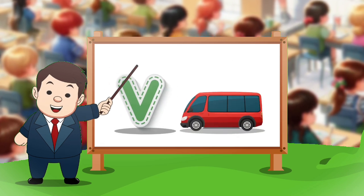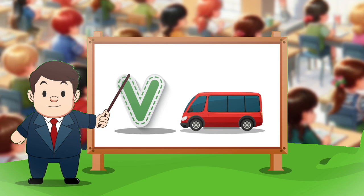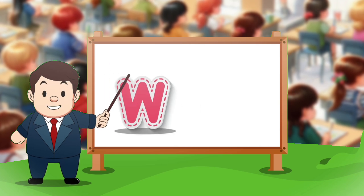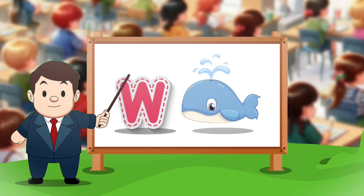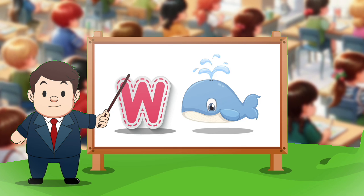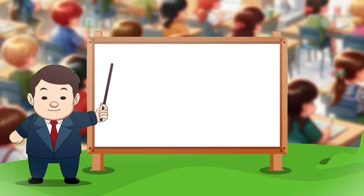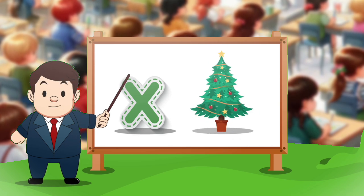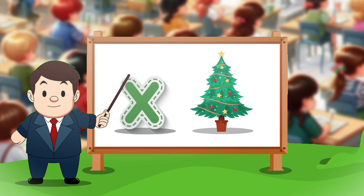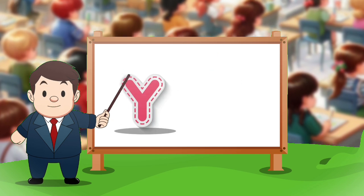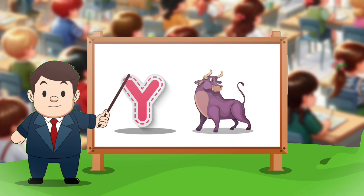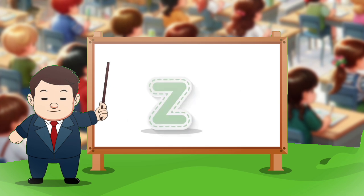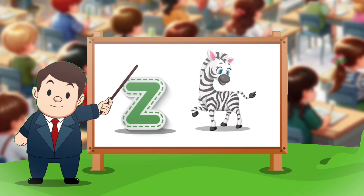V. V for penguin. V for eagle. X. X for eagle. Y. Y for york. Z for zebra.